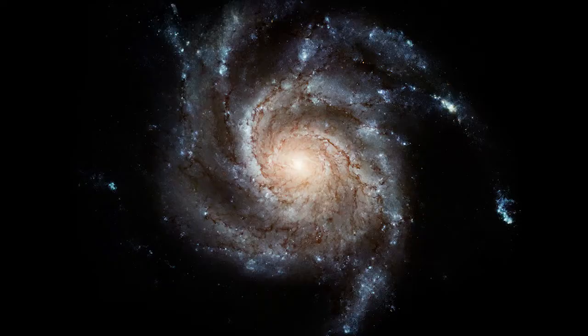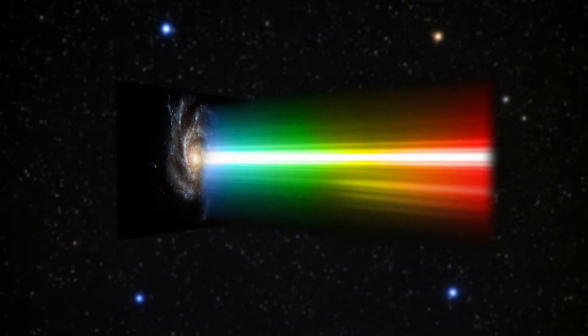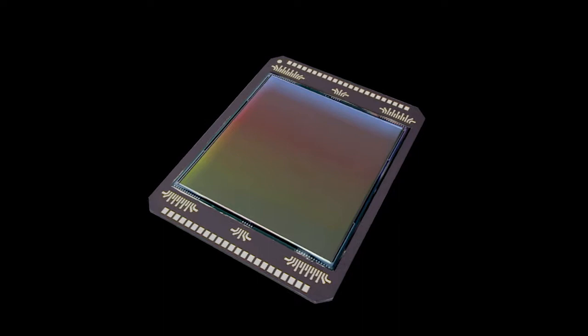Once the light enters the spectrograph, it is split by a dispersive optical element into its different components, or wavelengths, in order to be studied. This element acts much like rain droplets that disperse the light to form a rainbow. This dispersed light is then focused onto a detector and is seen as a spectrum.